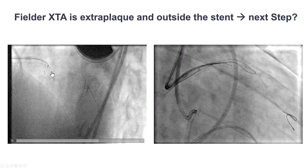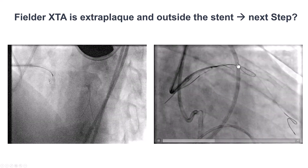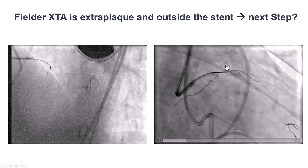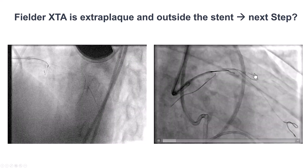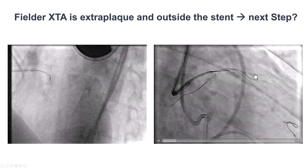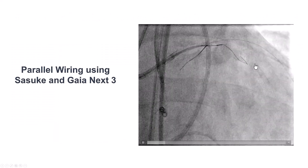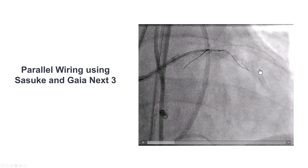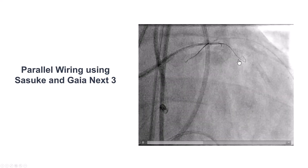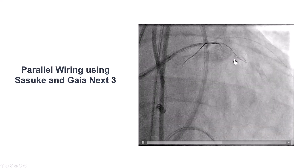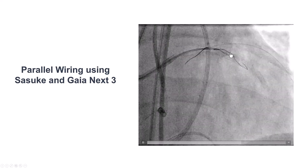But unfortunately, despite de-escalating to a Fielder XTA, we found that the Fielder XTA was actually following a course outside the previously placed stents. One option is to knuckle all the way and then re-enter, but because this is the LAD, we don't want to lose any potential large side branches like diagonals. So that's not a good option.